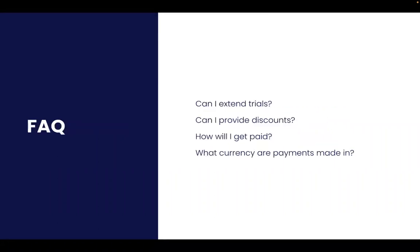Now, to wrap it all up, let's go over some frequently asked questions. We often get asked: can I extend trials or provide discounts? The answer to both is yes — in your app configuration page on Monday, you'll be able to see the admin controls necessary to extend trials and provide discounts to your users. Payments to you will happen on a monthly basis. Monday will provide a report with your subscription details, and based on that report you will invoice Monday for your earnings, and then Monday will pay you. Payments will be in U.S. dollars.